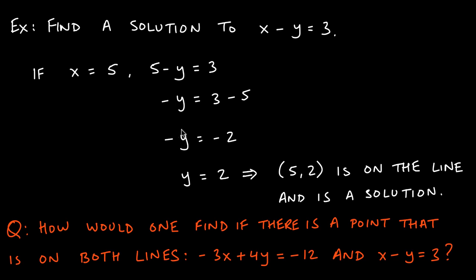To get y by itself I multiply or divide both sides by negative 1, giving y equals 2. So at x equals 5 and y equals 2, the point five comma 2 is a solution to this equation and is also on the graph of that line. This brings us to the key question these examples were motivating.